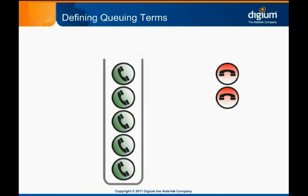Generically, somebody who answers a queue might be called an operator, agent, or representative. Of course, Asterisk doesn't really know anything about the person who might answer a phone, but it is configured to know about the devices that are set up to answer queue calls. Within Asterisk, the very specific term of queue member is used to describe a phone or device configured to answer queue calls. Older versions of Asterisk had a feature called agents that were related to call queues, but the feature was deprecated and is only kept for backwards compatibility — it is not recommended for use. It can be confusing and inaccurate to refer to queue members as agents, so we encourage you to avoid using the term agents and instead use the term member when talking about Asterisk call queues.